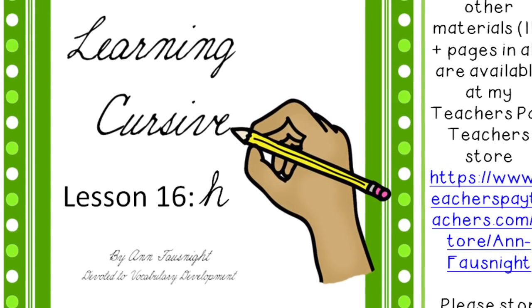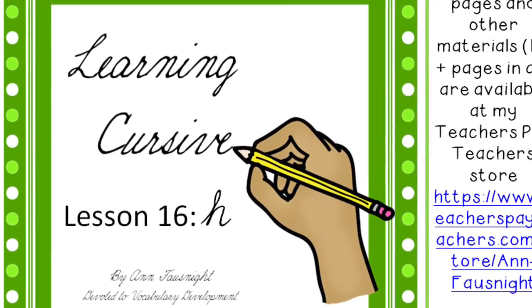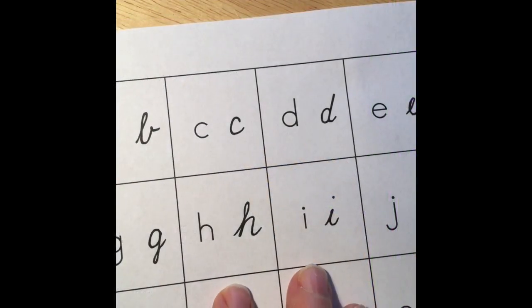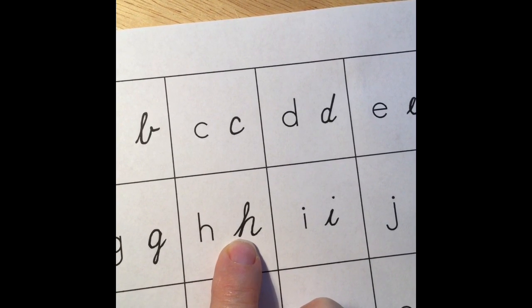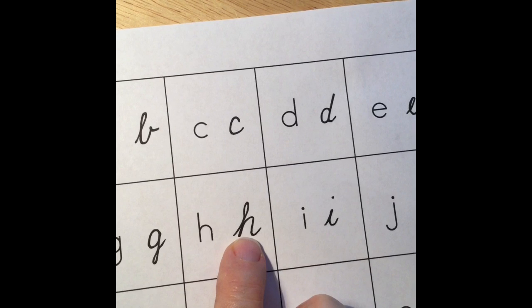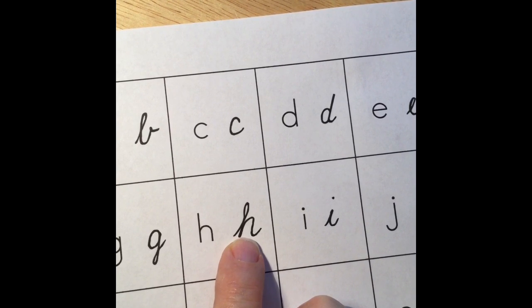Learning Cursive Lesson 16, lowercase h. We can see that a printed h looks similar to a cursive h. It has the connector that makes a loop, and it has a connector at the end, and it's slanted. But hiding inside that letter, we can find the printed h.